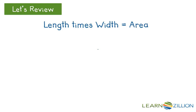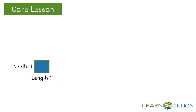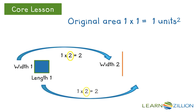To find the area of a rectangle, multiply the length times the width. Let's take a closer look at the area of a scaled drawing. The original drawing has dimensions of 1 unit by 1 unit for length and width. When we multiply by a scale factor of 2, the scaled drawing has dimensions of 2 by 2 units.